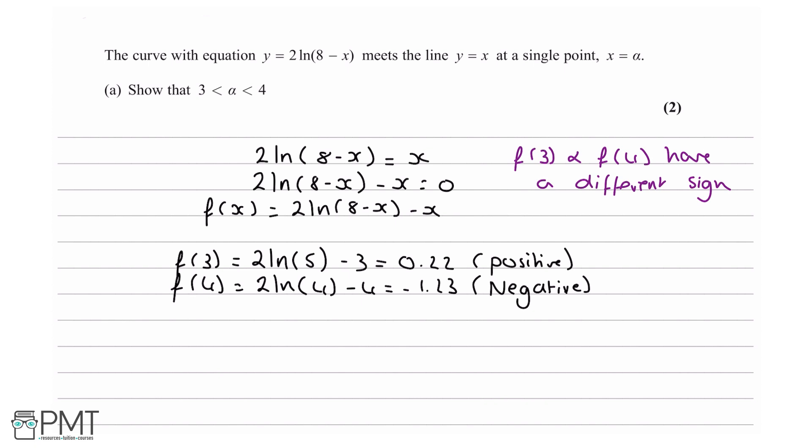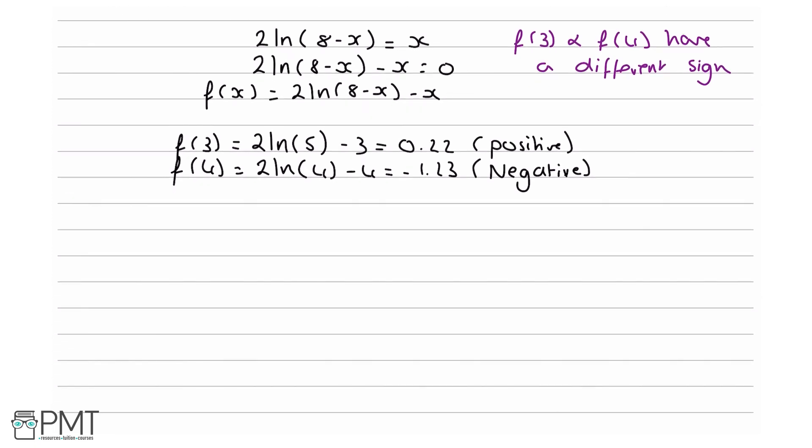Now we've got the bulk of the argument done. We just need to finish it with a good concluding statement. You need to say that f(x) changes sign between 3 and 4, and you also need to say one more key thing: the function is continuous. This is a really important point, and it just means that throughout 3 to 4, each x value leads to a specific y value.